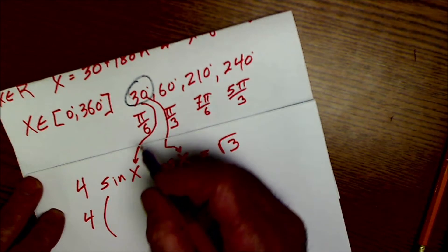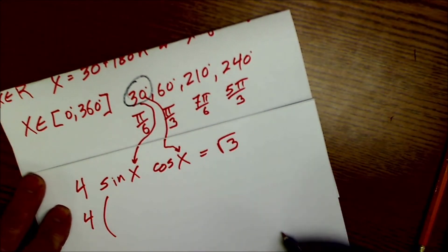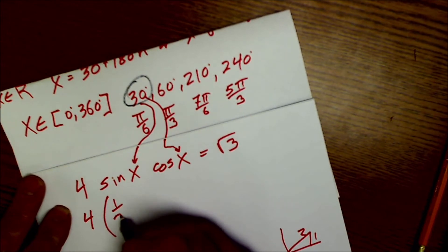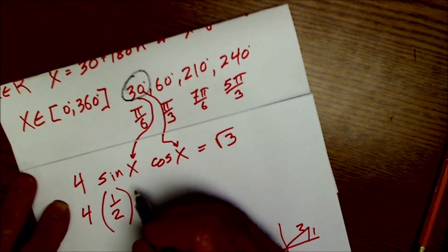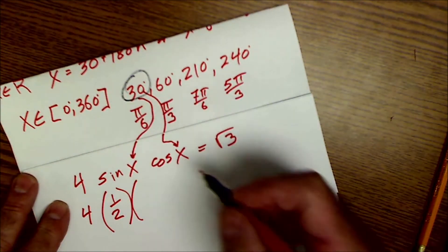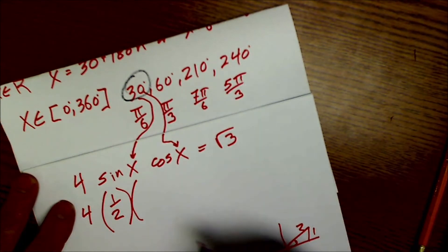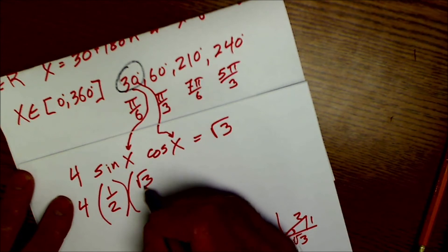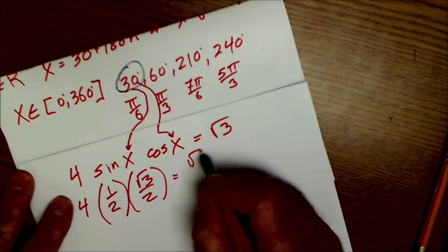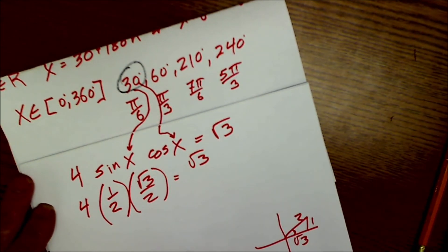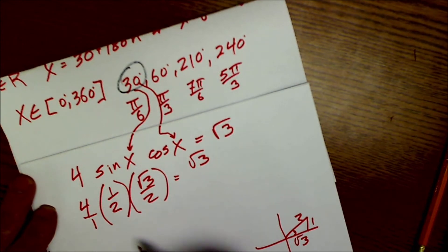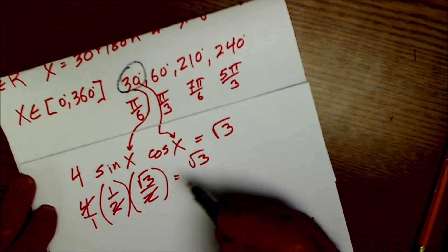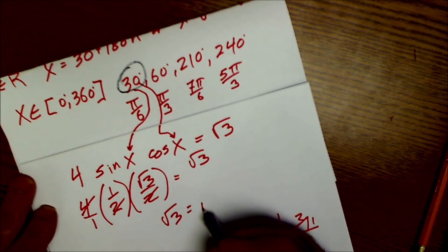So I take 4, sine of 30, sine of 30 is 1 half, cosine of 30 is root 3 over 2, and that should be equal to root 3. So let's see, 4 over 1, 4 cancels with 4, and I have root 3 equals root 3.